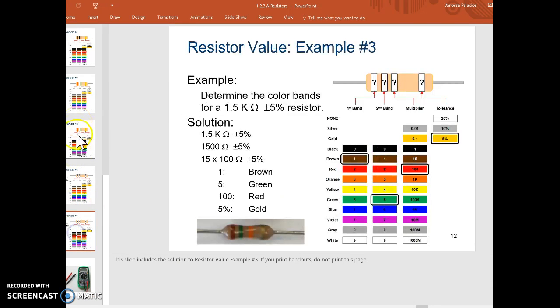Let's look back at the legend. Orange, orange, what is that? 3, 3, brown times 10. So 33 times 10, and then gold is 5%. So what we've been working with is a 330-ohm resistor with a tolerance of plus or minus 5%.